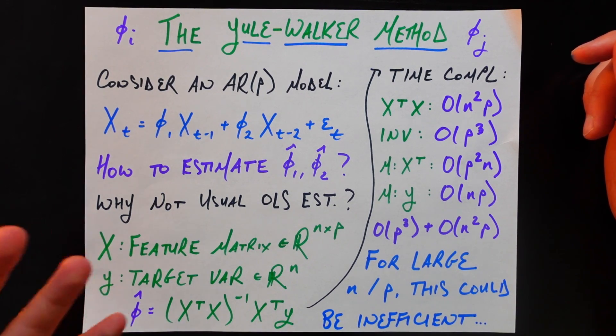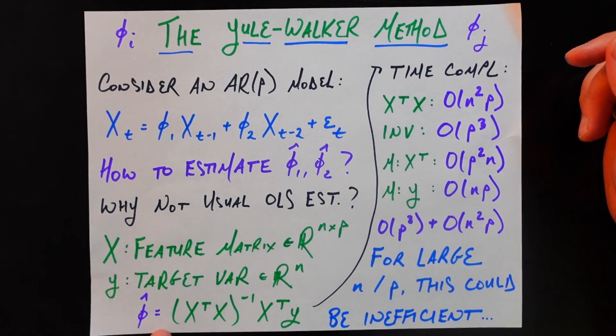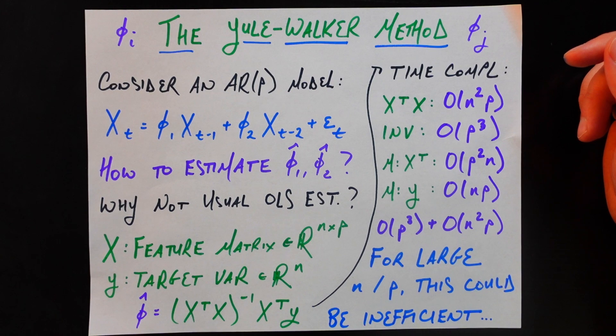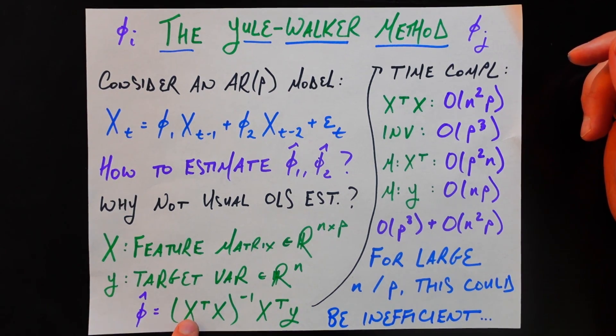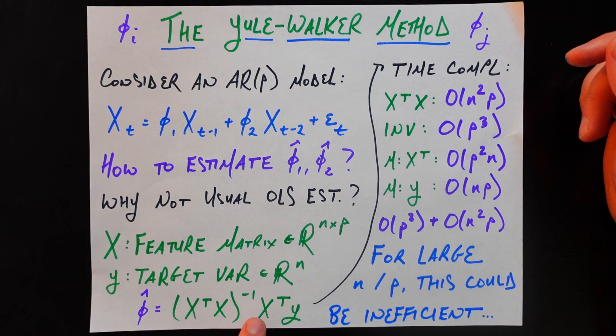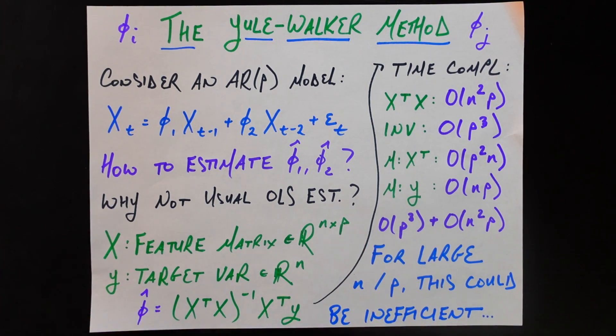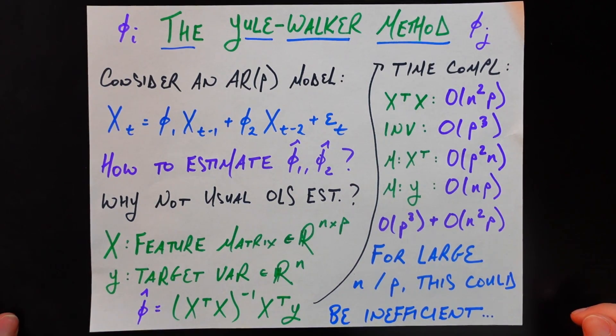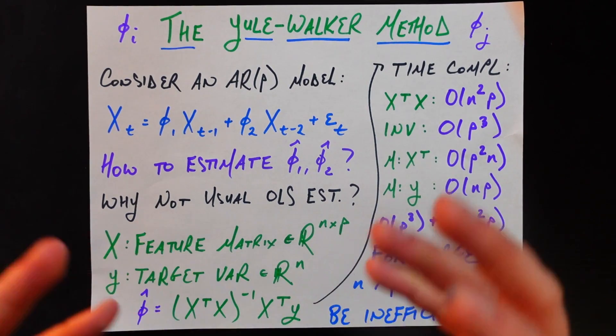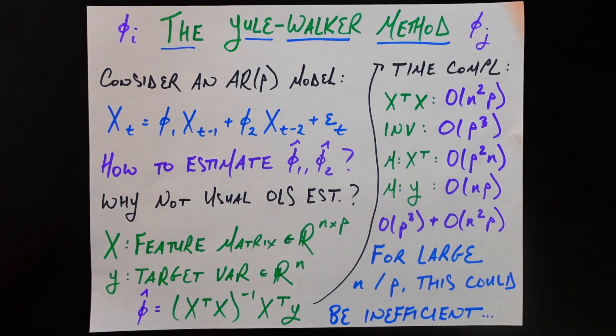Y is our target variable, which is going to be a vector in R^N. And we know there's a closed form solution for this. That closed form solution is going to be the parameter estimates are X transpose X. We get that square matrix, that P by P square matrix. We invert it, we multiply that by X transpose Y. So hopefully that's somewhat familiar to you as just the closed form of how we would get the parameters for any OLS, including this AR(P), which at the end of the day is just an OLS with P features. It's just that those features happen to be the lagged versions of the process itself.